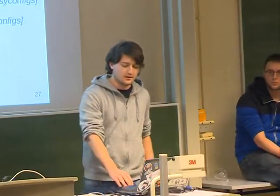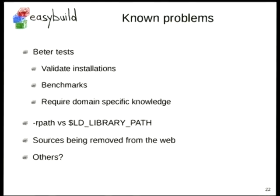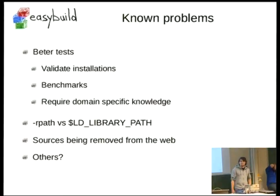Are the sources stored anywhere, or is there some concern about availability? When you run EasyBuild with sources, some of them might be stored locally. This is one of the known problems — sources can be removed from the web. There are some efforts to archive the sources we're allowed to distribute and mirror them somewhere. There's a project being discussed, but it's external from EasyBuild itself. That's a separate problem we're not trying to solve within EasyBuild.